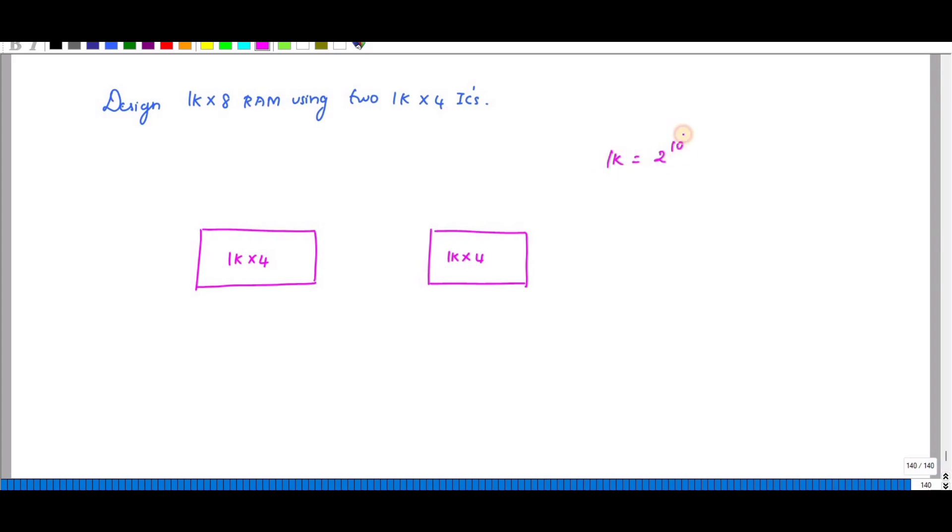1k represents 2 power 10, so 10 is the address space, which ranges from A0 to A9, totally 10. The address bus is in action space A0 to A9. This one represents the data bus, so here totally I have 8 data bus and it is bidirectional. This is your data bus.